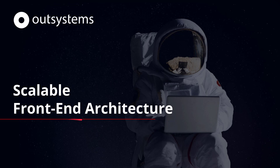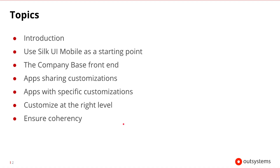Welcome to the Scalable Frontend Architecture session. In this session, we'll discuss how to create a scalable frontend architecture in OutSystems. We'll start by introducing the basic frontend elements in OutSystems and how to use Silk UI as a starting point. We'll discuss the frontend elements that become what we'll call the company base, and how that architecture will evolve when apps share customization and when apps need specific customizations. This will help us determine how to customize at the right level and ensure coherency of our frontend architecture. So let's go ahead and get started.